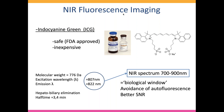Why use ICG? Because it's a safe molecule, known for more than 50 years, FDA approved, and inexpensive — in Belgium, about 70 euros for 25 milligrams. ICG is activated in the near-infrared spectrum. The advantage of imaging in this biological window is that we can avoid autofluorescence from other molecules in our body, such as porphyrin in hemoglobin, giving a very low background fluorescent signal and a very good contrast — a better signal-to-noise ratio.